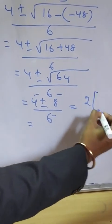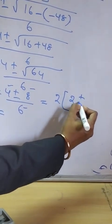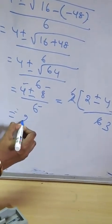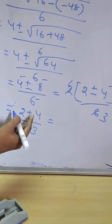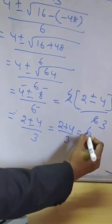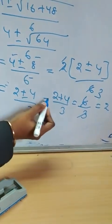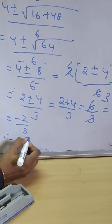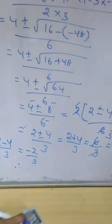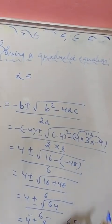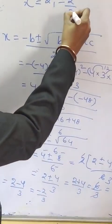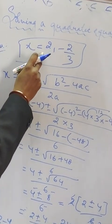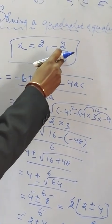Taking the plus sign first: (2 + 4) / 3 = 6/3 = 2. Taking the minus sign: (2 - 4) / 3 = -2/3. Therefore the values of x are 2 and -2/3. This is an example of how by using the quadratic formula we are able to find the roots of the given quadratic equation as 2 and -2/3.